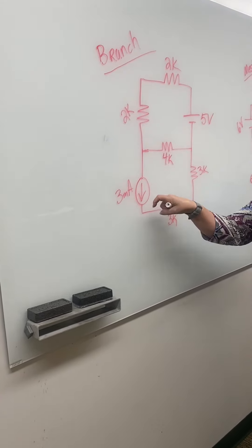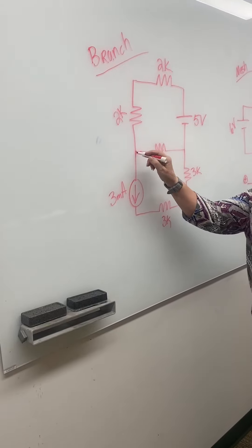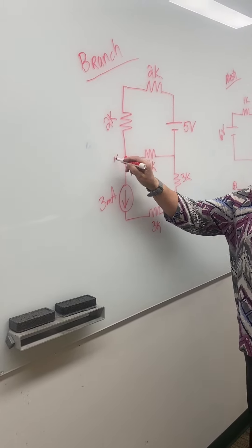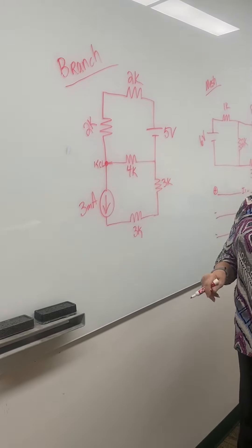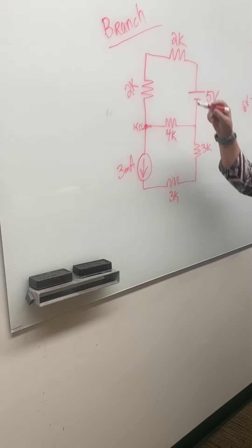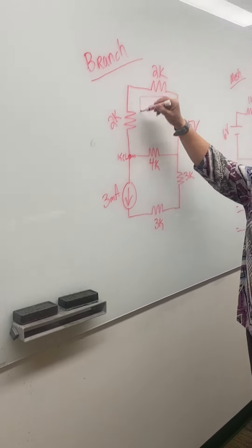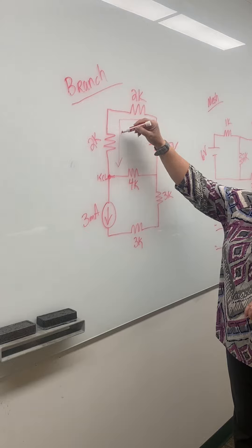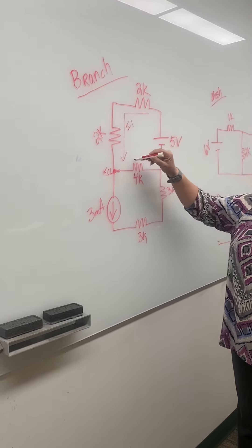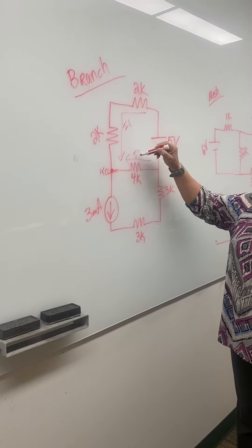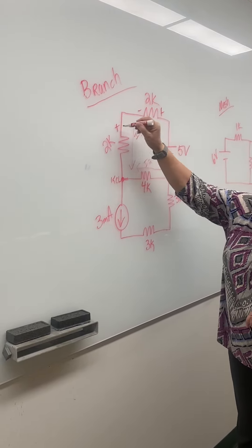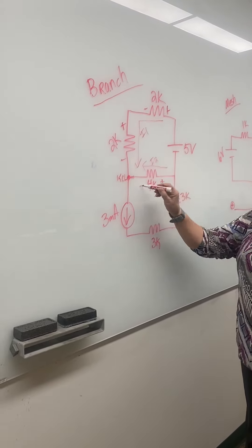This current is leaving. I'm going to make my KCL here. And it's going to be leaving equals entering. So I'm going to make this I1 entering the dot and this I2 entering the dot. So it's plus to minus, plus to minus, plus to minus.